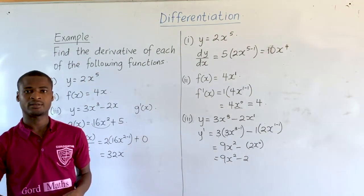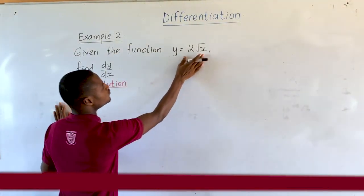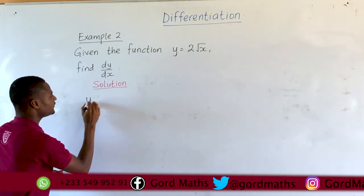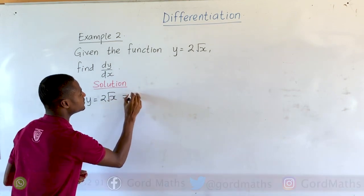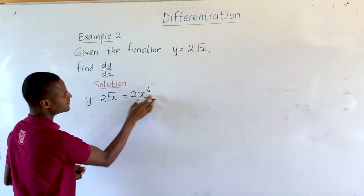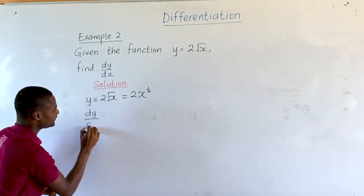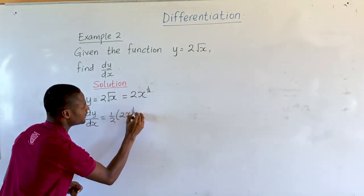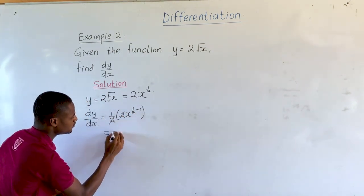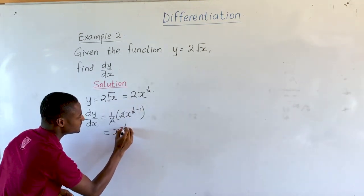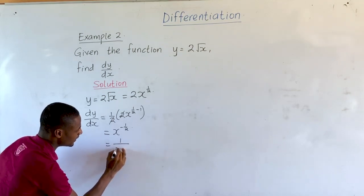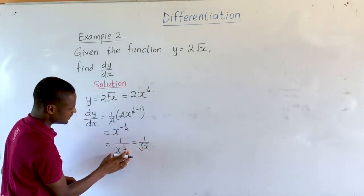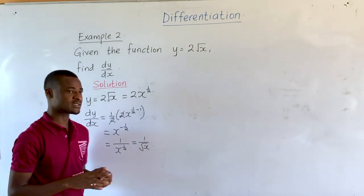We will take another example. Given the function y is equal to 2 root x, find dy/dx, the first derivative. The function y equals 2 square root of x is the same as 2x raised to the power one half, as discussed in our lesson on indices. So dy/dx equals one half times 2x raised to the power one half minus 1, which is negative one half. That gives us 1 over x to the power one half, which equals 1 over the square root of x.